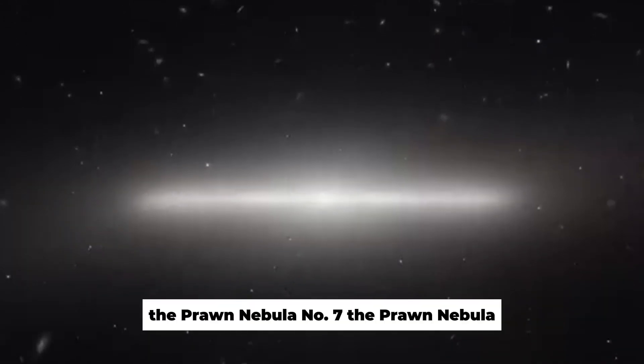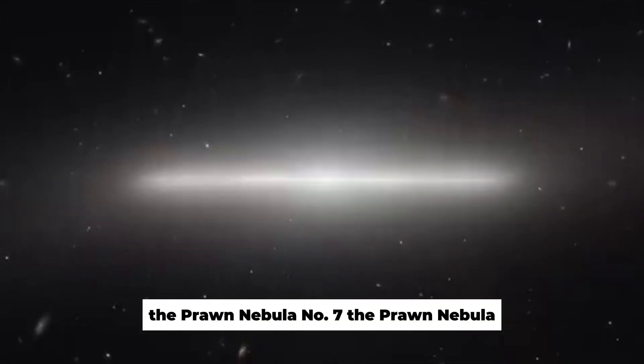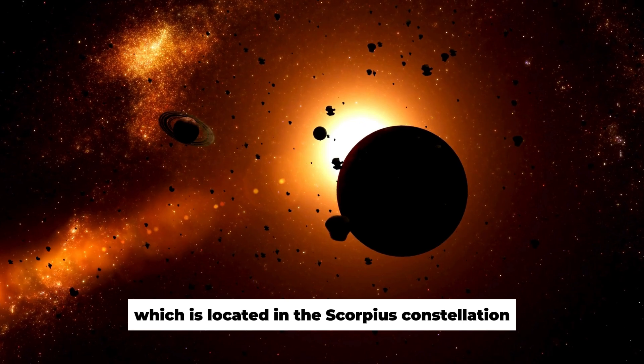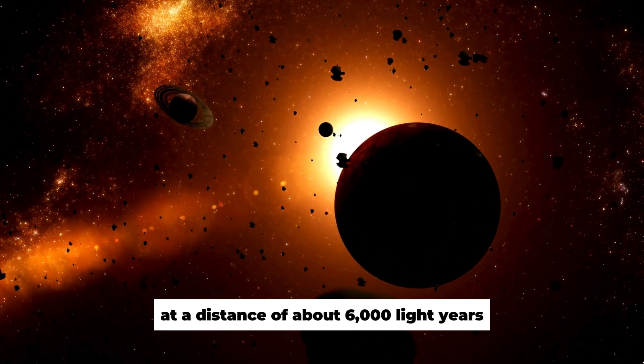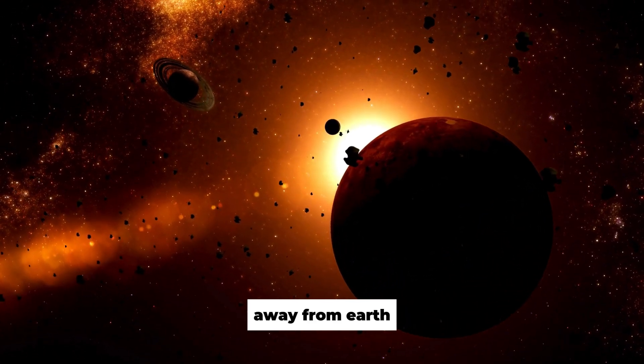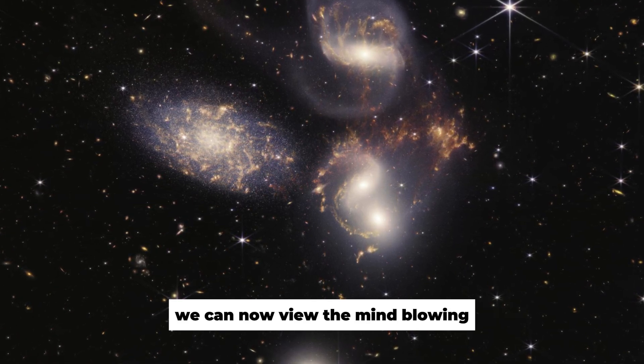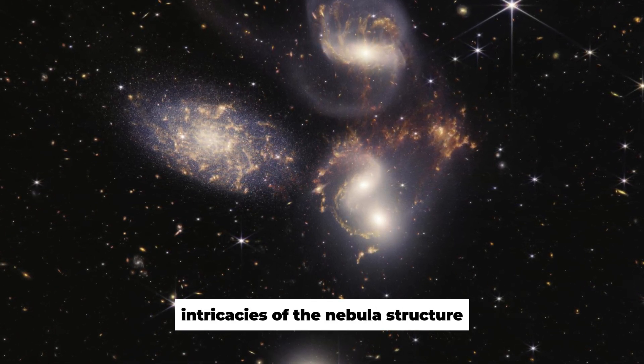Number 7: The Prawn Nebula. This picture shows the wondrous Prawn Nebula, which is located in the Scorpius constellation at a distance of about 6,000 light-years away from Earth. All thanks to this powerful space observatory, we can now view the mind-blowing intricacies of the nebula structure.